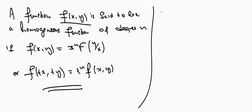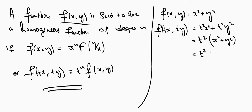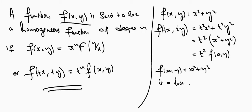We can check with an example: f(x,y) = x² + y². If we substitute x by tx and y by ty, we get t²x² + t²y², and taking t² outside we get t² into (x² + y²), which is t^n times f(x,y) with n=2. So f(x,y) = x² + y² is a homogeneous function of degree 2.